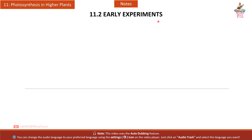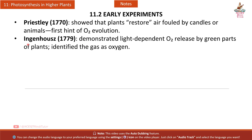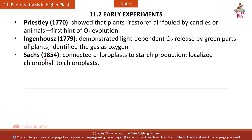Section 11.2 Early experiments: Priestley (1770) showed that plants restore air fouled by candles or animals — the first hint of O2 evolution. Ingenhousz (1779) demonstrated light-dependent O2 release by green parts of plants and identified the gas as oxygen. Sachs (1854) connected chloroplasts to starch production and localized chlorophyll to chloroplasts.